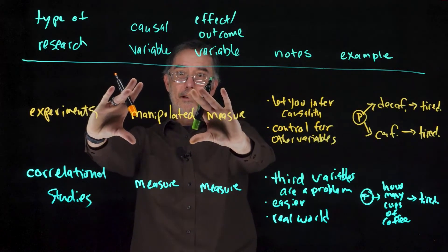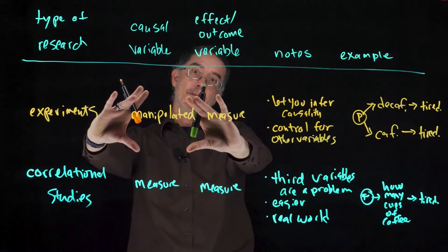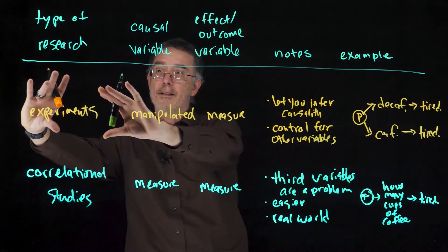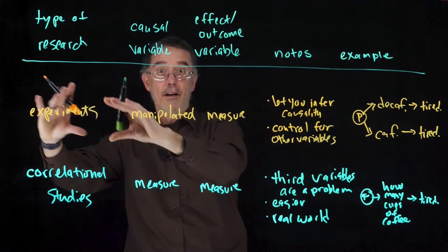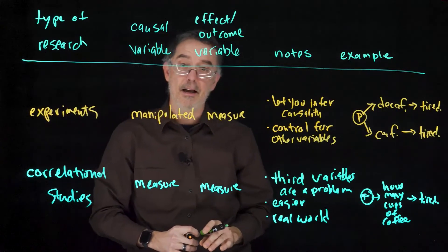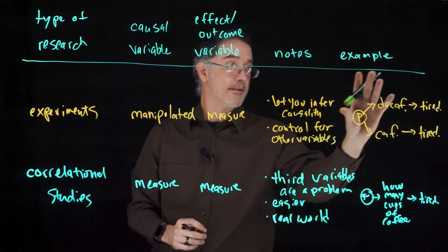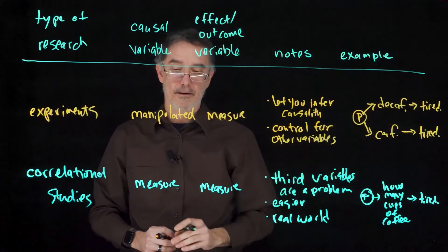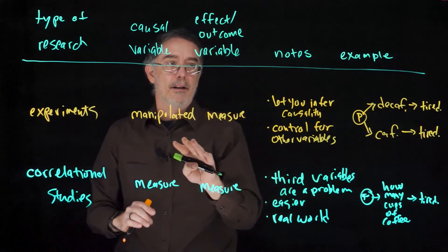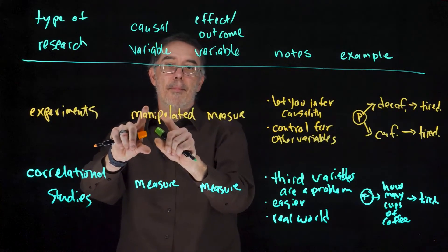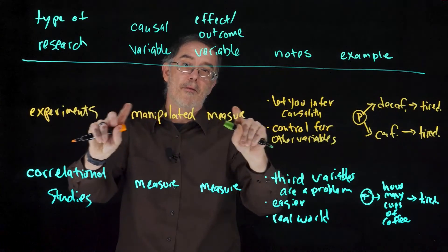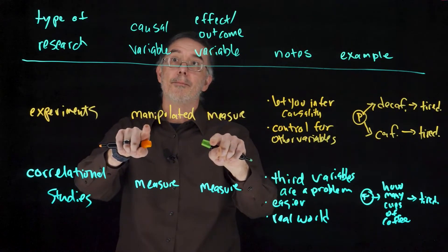These manipulated variables occur only in experiments, and they are actually how you know an experiment happened — people have to be randomly assigned to these experiences, like drinking caffeinated or decaffeinated coffee. So experiments have special terms for these variables.